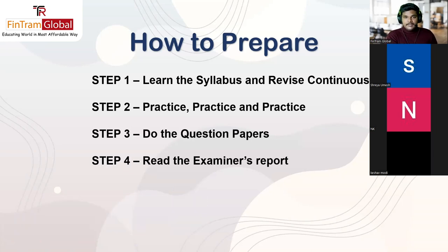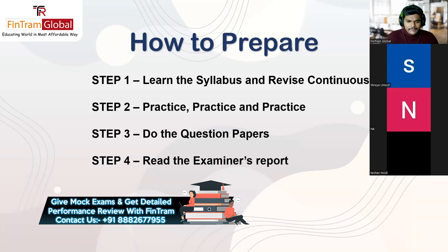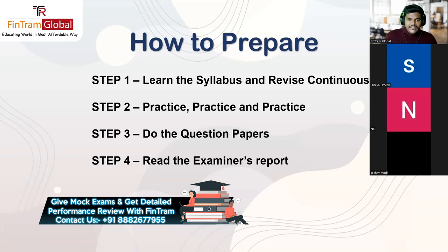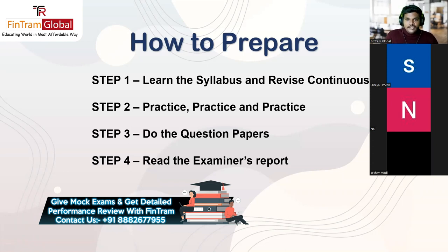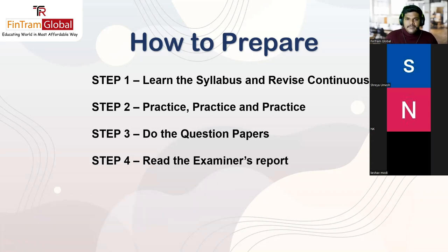Step four is reading the Examiner's Report — a very resourceful resource. It gives you an idea of what the examiner expects, which is really crucial for Audit and Assurance. It's a report from the examiner stating what strong candidates did well and what poor candidates did wrong in a particular exam sitting. Reading it while practicing past papers helps you understand where you went wrong and how to improve.